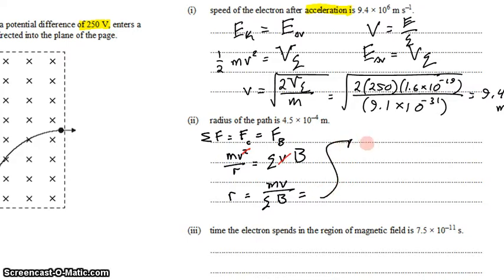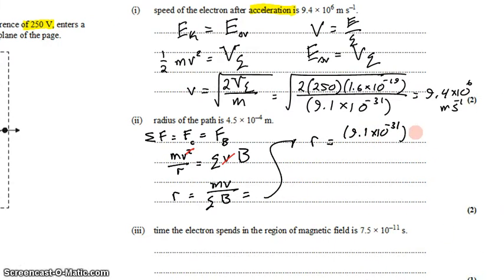We'll take that up here, and we'll say that r is equal to the mass of an electron, 9.1 times 10 to the negative 31 kilograms, times the velocity, which we determined was 9.4, times 10 to the sixth meters per second,